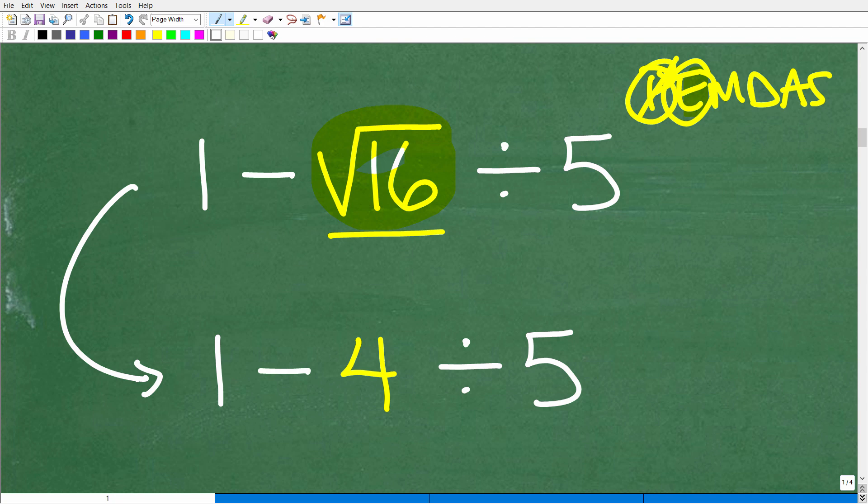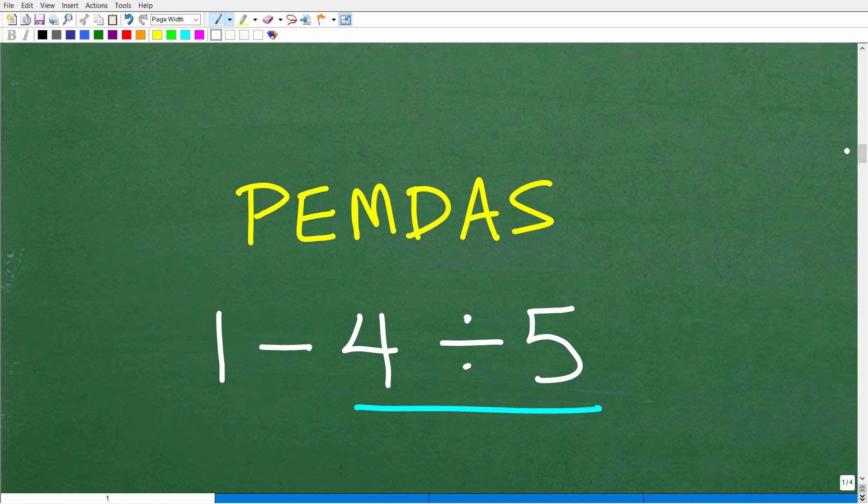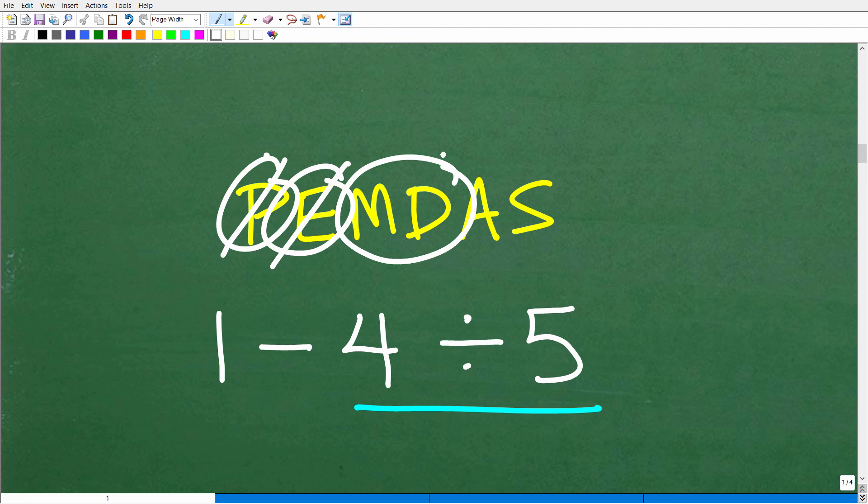And now we have to go back to our PEMDAS, right? Because we have some operations here. We have subtraction and division. So, what are we going to do next? Well, again, referring back to our little checklist here. Well, there are no parentheses, no P. We took care of our exponents, our square root. Is there multiplication and division? Yes, indeed. That's always going to trump addition and subtraction. So, we have to do the division first.